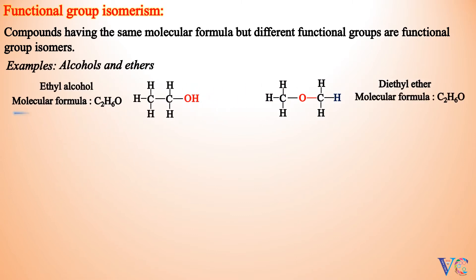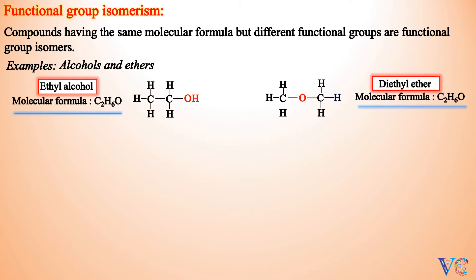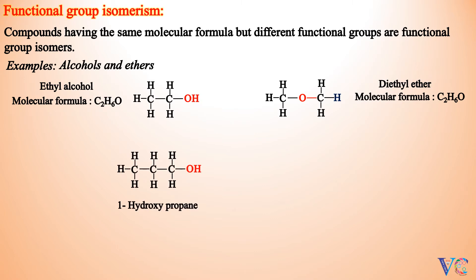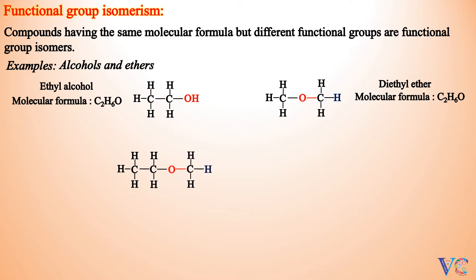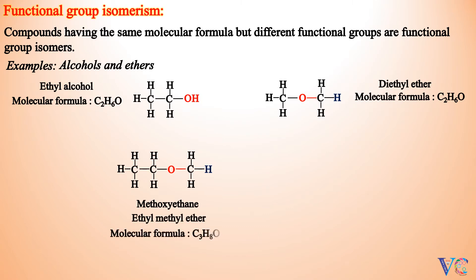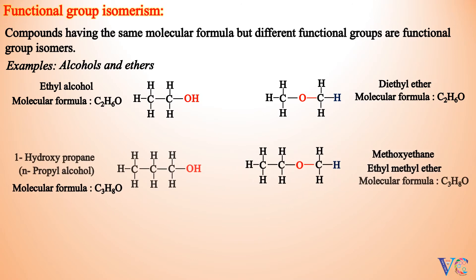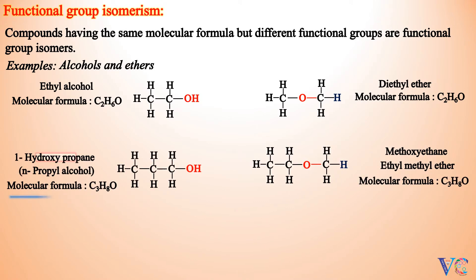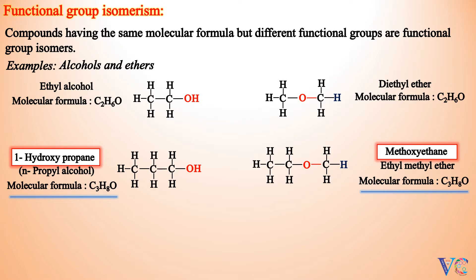Both Ethyl Alcohol and Diethyl Ether are functional group isomers. 1-Hydroxypropane, that is N-Propyl Alcohol, has molecular formula C3H8O. Methoxyethane, or Ethyl Methyl Ether, also has molecular formula C3H8O. Both 1-Hydroxypropane and Methoxyethane are functional group isomers.